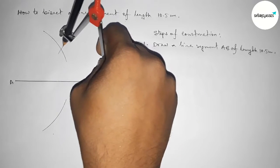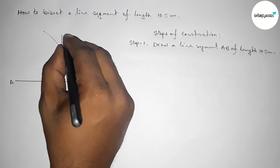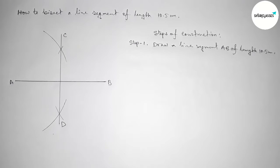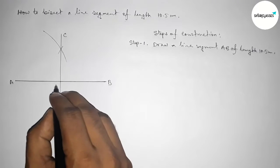So now joining this line. Taking point here C and here D. So here the line CD bisects the line AB here at the point P. So now step number two.